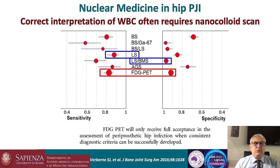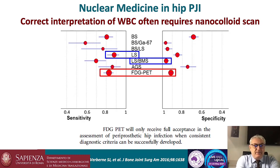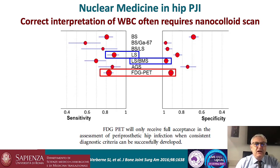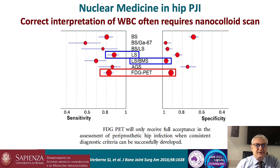These data were also supported by a meta-analysis by Dr. Verbern, which demonstrated that coupling the white blood cell scan — leucocyte scan — with bone marrow scintigraphy yields the best sensitivity and specificity of all other nuclear medicine examinations, including FDG PET.